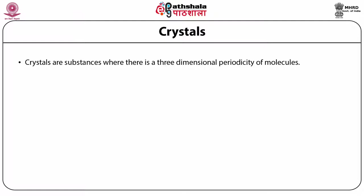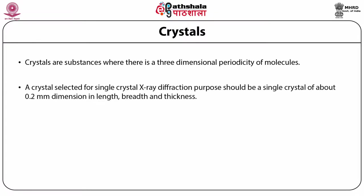Taking another perpendicular direction with yet another consistent separation gives three-dimensional periodicity. For example, sodium chloride, copper sulphide and zinc sulphide are solids, but not all solids are crystals. Only three-dimensional periodicity of molecules distinguishes a crystal from an ordinary solid. A crystal selected for single crystal X-ray diffraction should be about 0.2 millimeter in length, breadth and thickness.